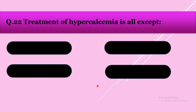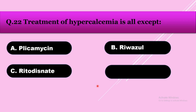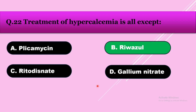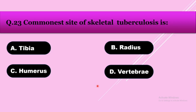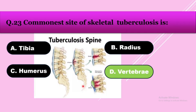Question number twenty-two: Treatment of hypercalcemia includes all except — option A: plicamycin, option B: rivazole, option C: risedronate, option D: gallium nitrate. The answer is rivazole. Question number twenty-three: Commonest site of skeletal tuberculosis — option A: tibia, option B: radius, option C: humerus, option D: vertebra. The answer is vertebra. The commonest site is vertebral, with destruction of the vertebral body.